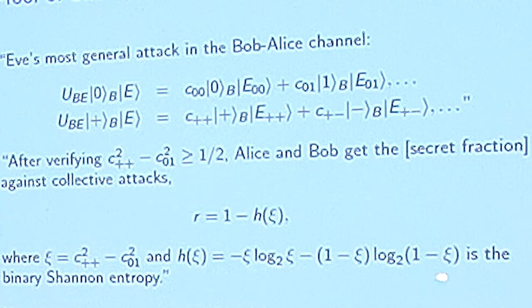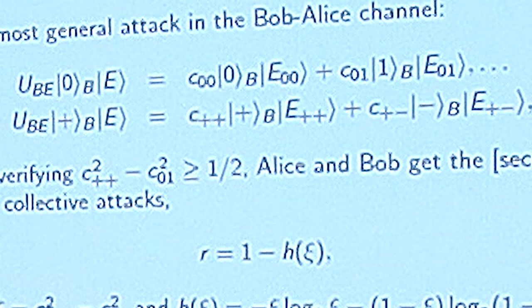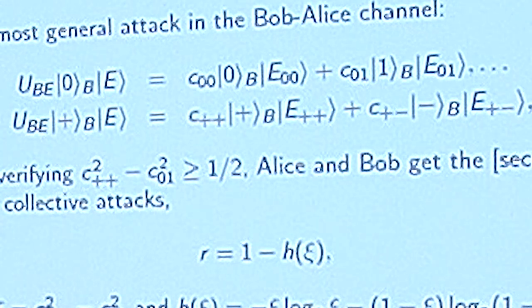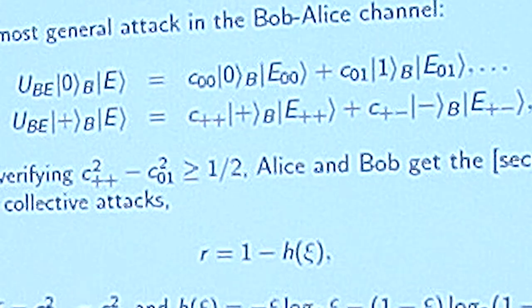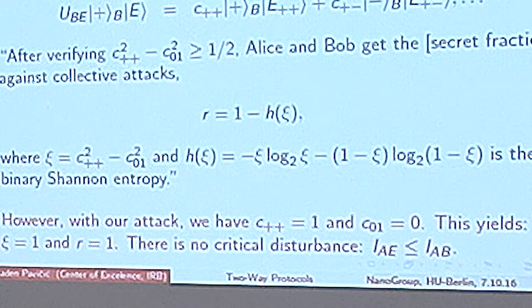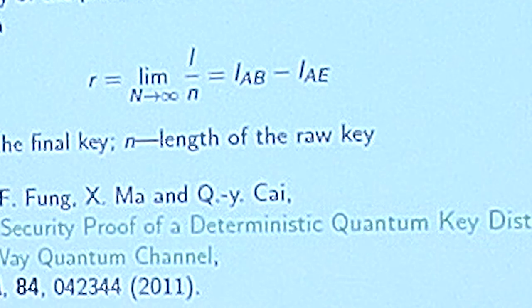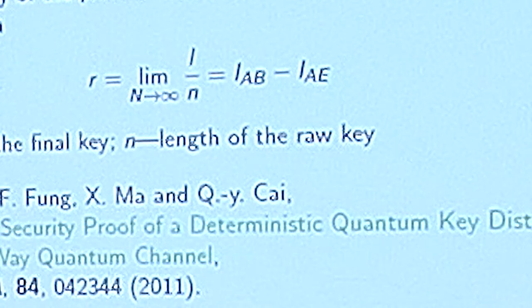And where the variable is the difference between these terms. So since in our attack we have C++ and also C00 equal to 1, and C01 equal to 0, we obtain that R is always equal to 1. There is no critical disturbance.